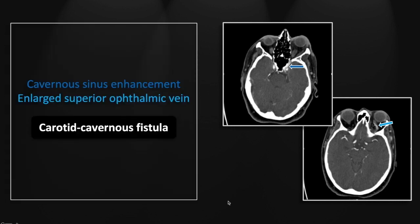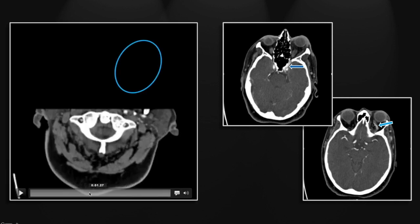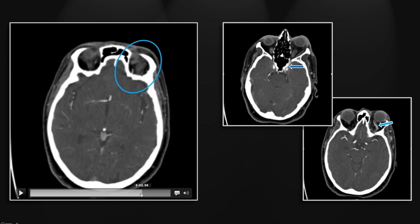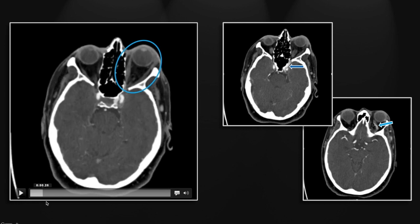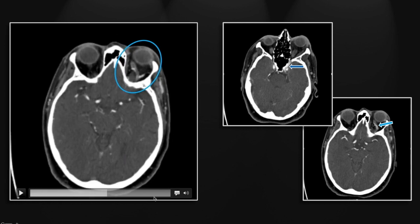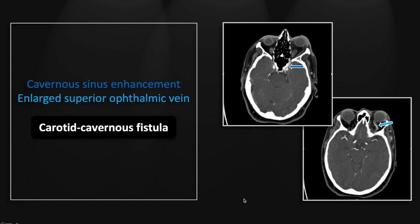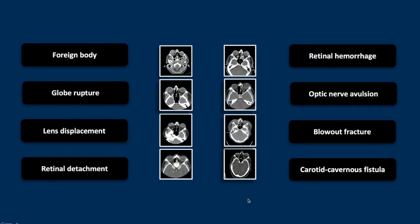That is a great case of carotid cavernous fistula. These patients frequently will present with chemosis. You can see a little bit of lid swelling overlying that left orbit. That's a case of a carotid cavernous fistula, and that concludes our session on orbit trauma.